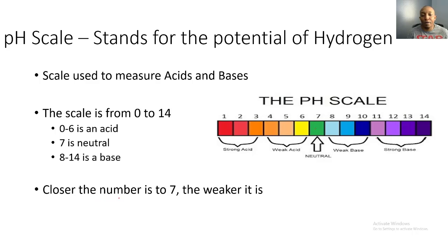A good rule of thumb: the closer a number is to 7, the weaker or safer it is for your body. The further you get from 7, the more dangerous it is. A banana is fine, baking soda is fine, but hydrochloric acid, household bleach, ammonia, and drain cleaner are not safe for your body.